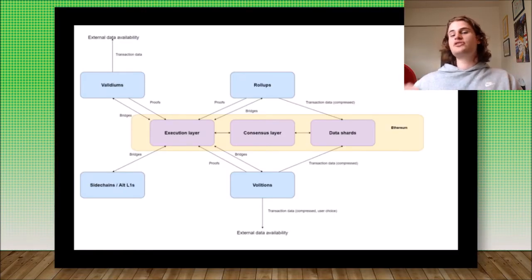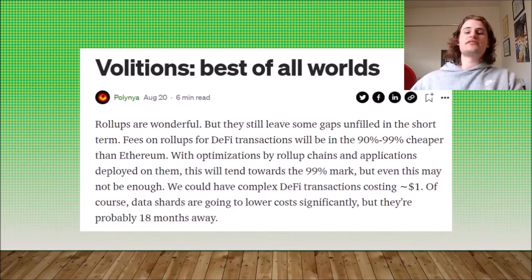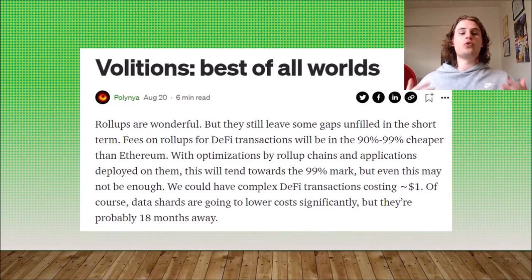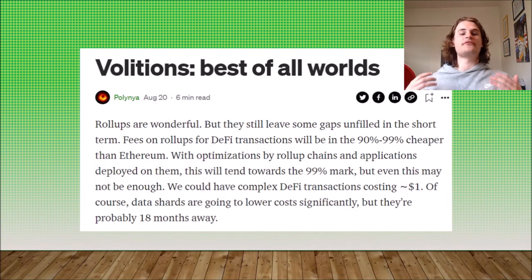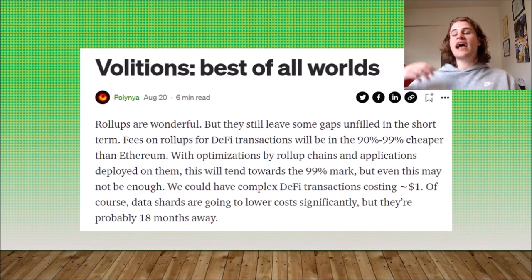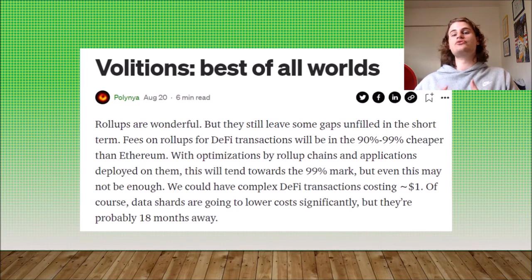Validiums and Volitions differ from rollups a little bit because they store the transaction data in a slightly different way. The first thing I'm going to discuss is Volitions, essentially because Volitions really are the best of all worlds. Rollups are wonderful — they make transactions on the Ethereum network 90 to 99% cheaper, which is absolutely amazing. However, Volitions can actually optimize even more, and transactions can get even cheaper and even faster through the use of a Volition.